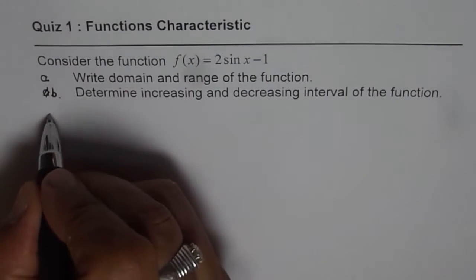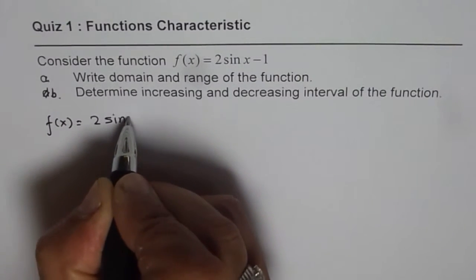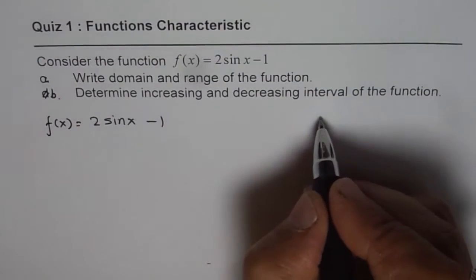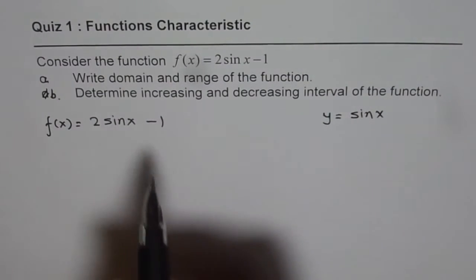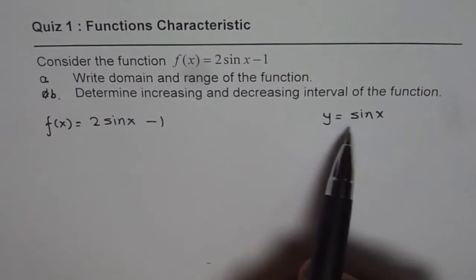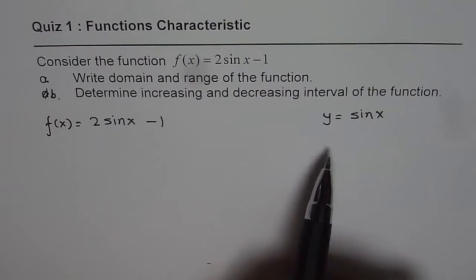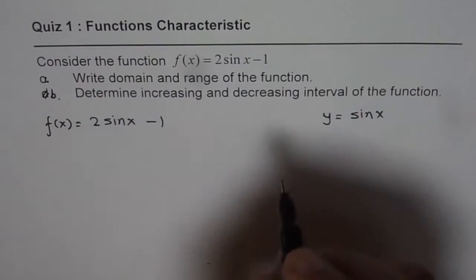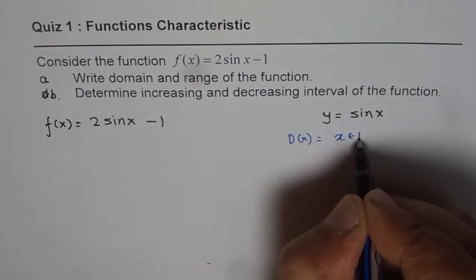We are given f(x) = 2·sin(x) − 1. Let us consider the parent function, which is y = sin(x). I will write the domain and range using the parent function — that is a very helpful technique. For the parent function y = sin(x), the domain is x belongs to real numbers.